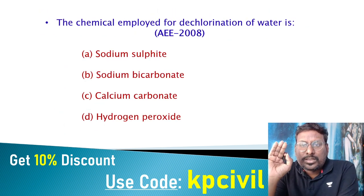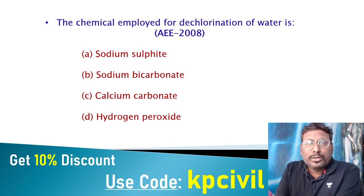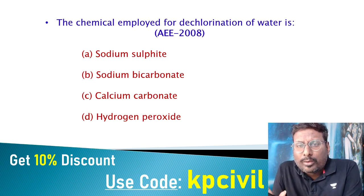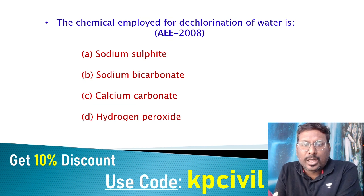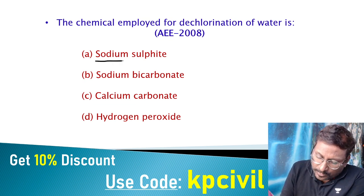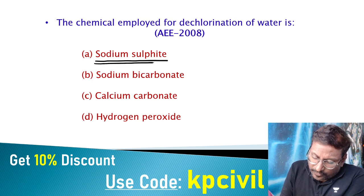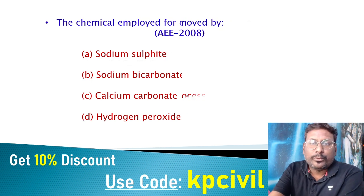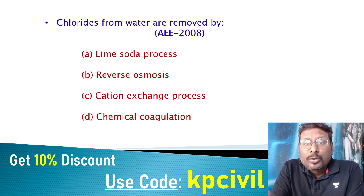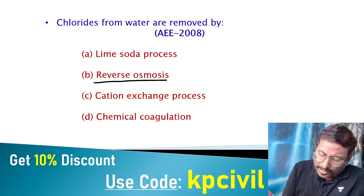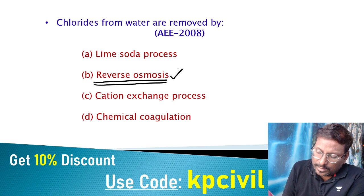The most important numerical from total water treatment is the amount of bleaching powder required. For dechlorination, the chemical employed — as per the given option — is sodium sulfide. Chlorides from water are removed by reverse osmosis.